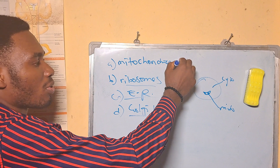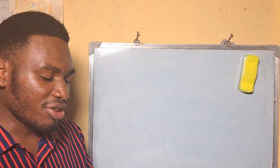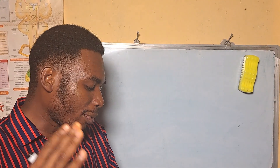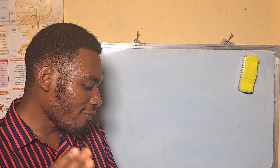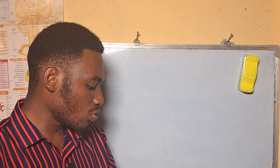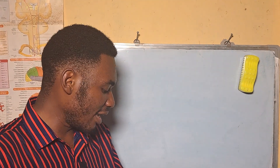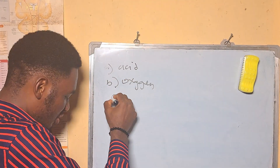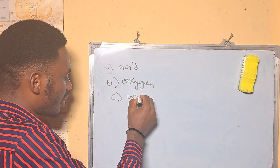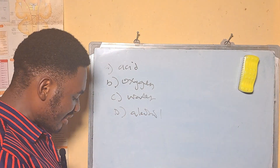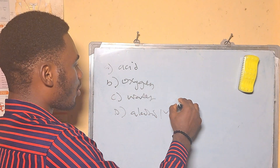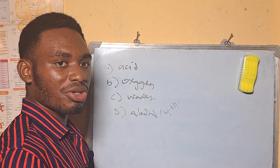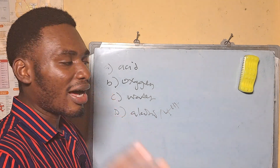Yeast respires anaerobically to convert simple sugar to carbon dioxide and — A: acid, B: oxygen, C: water, D: alcohol. The answer is D, alcohol, because the products of yeast respiration are CO2 and alcohol.